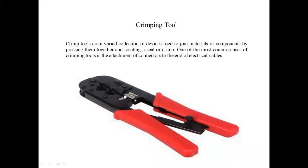Look at the picture shown on your screen. There is a silver blade used to cut the wires, and there are two parts used to crimp the wires in the connectors. One of the most common uses of the crimping tool is the attachment of connectors to the end of electric cables.